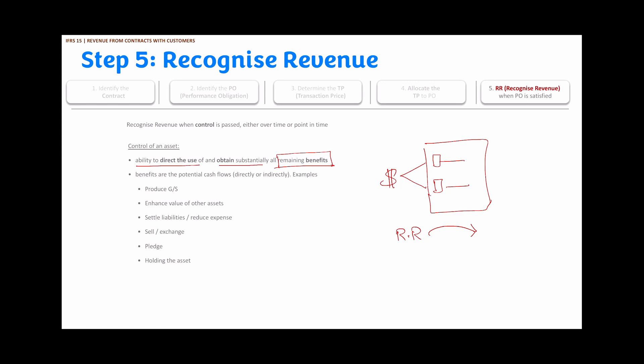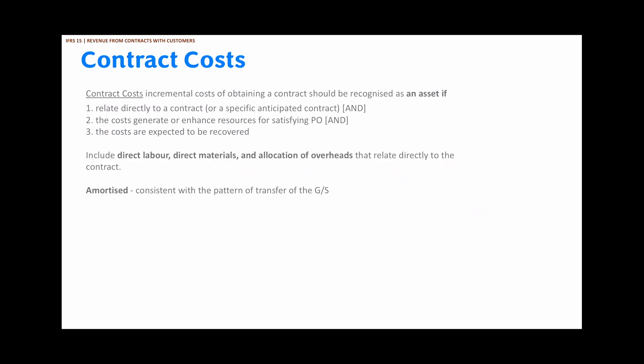Control is essentially the ability to direct the use and enjoy the benefits of an asset. Benefits could be potential cash flows, either direct or indirect. Examples include the ability to produce goods or provide services with the asset, using the asset to enhance the value of other assets, settling liabilities or reducing expenses, selling or exchanging the asset, pledging the asset to borrow a loan, or simply holding the asset.